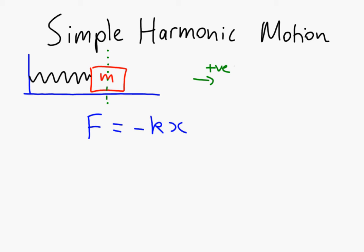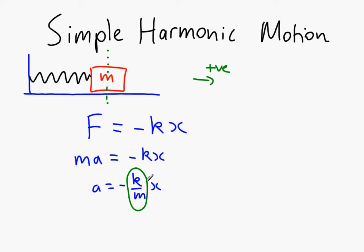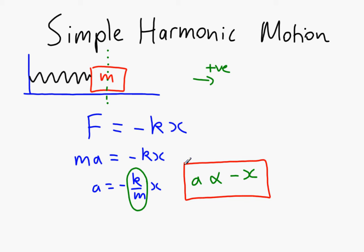F equals ma, so therefore ma equals minus kx. For a mass-spring system, therefore a equals minus k over m times x. Now k and m, if we don't alter the spring or the mass, are constants. Therefore we could express this as a proportionality: acceleration is proportional to minus x, the displacement. This is the defining feature of simple harmonic motion — the acceleration is proportional to the displacement and is in the opposite direction.